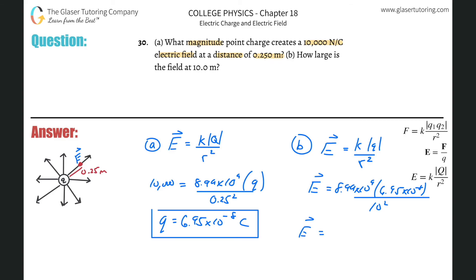So now let's calculate 8.99 times 10 to the ninth multiplied by 6.95 times 10 to the minus eighth, then divide that by 10 squared. And we get a value of about 6.25 newtons per coulomb. Notice that's significantly less. Before it was 10,000, now it's 6.25.